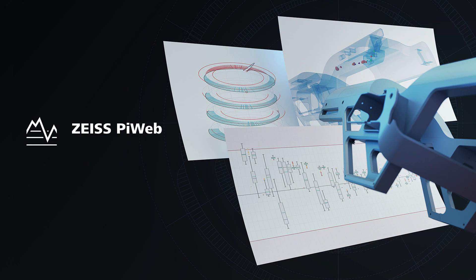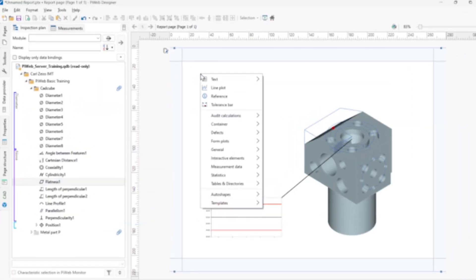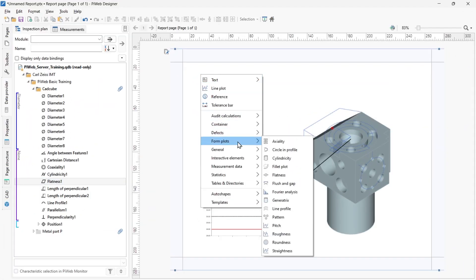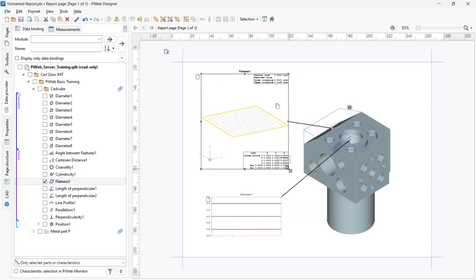Welcome to Zeiss PiWeb Designer. PiWeb Designer is the PiWeb tool used to create, edit, and design PiWeb reports. These reports become templates that are viewed with PiWeb Monitor and populated with data from the PiWeb database.